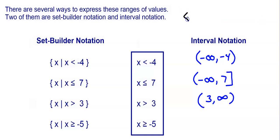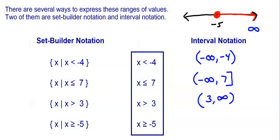Lastly, x is greater than or equal to negative 5. Drawing a number line, negative 5 gets a closed circle because it's equal to, and we shade everything to the right to positive infinity. The smallest number is negative 5 and infinity always gets a parenthesis. Because it's equal to, negative 5 gets a bracket: [−5, +∞).